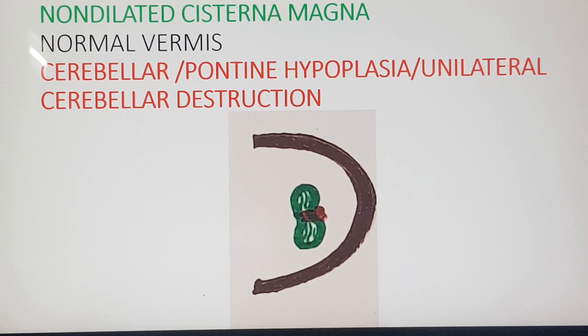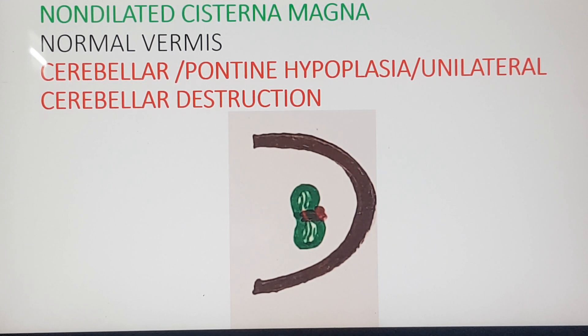Again the cisterna magna is not dilated. The vermis is normal, but the cerebellum is small. This could be cerebellar hypoplasia, pontine hypoplasia, or cerebellar destruction.